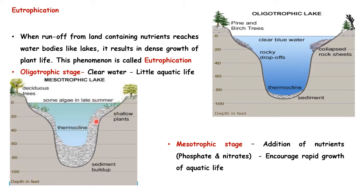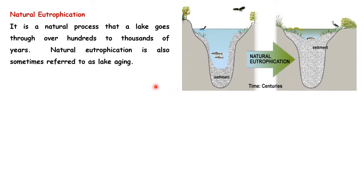Finally, you have the eutrophic stage. After hundreds of years, due to this natural process of continuous runoff, soil and dead matter of organisms settle down and the depth of the lake becomes very low — that stage is known as the eutrophic state. Eutrophication is defined as when runoff reaches the aquatic environment and enhances the growth of aquatic plants. It is a natural phenomenon, which is why we have natural eutrophication and cultural eutrophication.